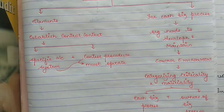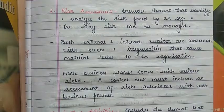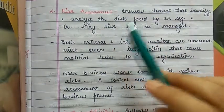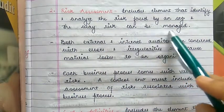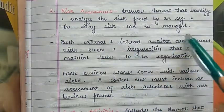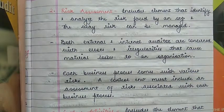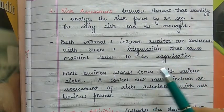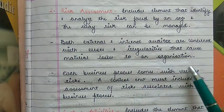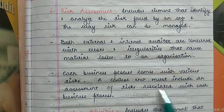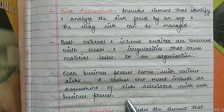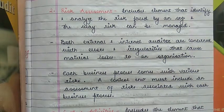Let's move on to the second point, risk assessment. Risk assessment includes elements that identify and analyze the risk faced by an organization and the way risk can be managed. Both internal and external auditors are concerned with the errors and irregularities that cause material loss to an organization. Each business process comes with various risks, and a control environment must include an assessment of risk associated with each business process.